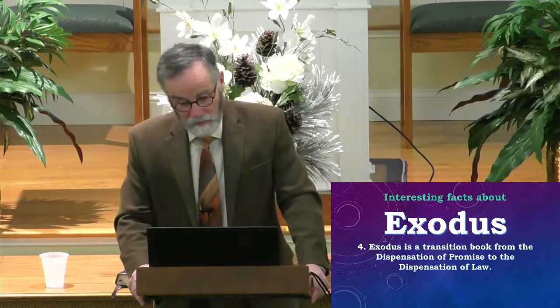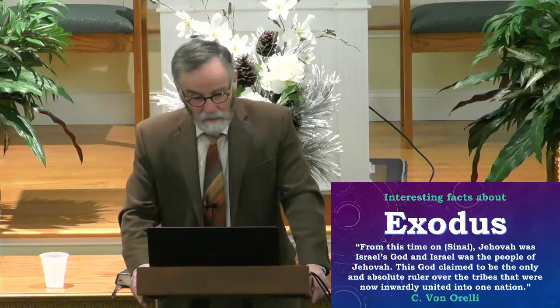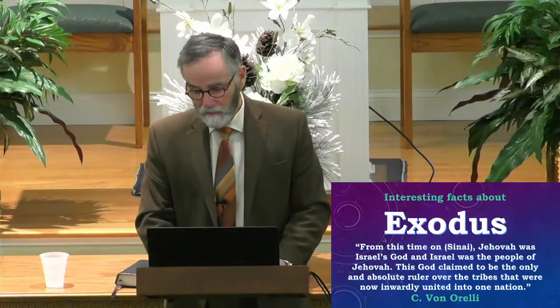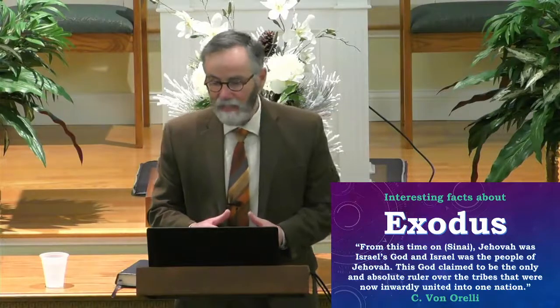Here's a helpful quote: 'From this time on, meaning at Mount Sinai, Jehovah was Israel's God and Israel was the people of Jehovah. This God claimed to be the only and absolute ruler over the tribes that were now inwardly united into one nation.' That's a pretty good capsule of what we see in the book of Exodus. Israel became organized — that band of slaves became organized at Mount Sinai into a recognizable nation. She stood out among all the other pagan nations in this respect: Israel had only one God. Egypt had hundreds of gods. All the other nations had many deities.